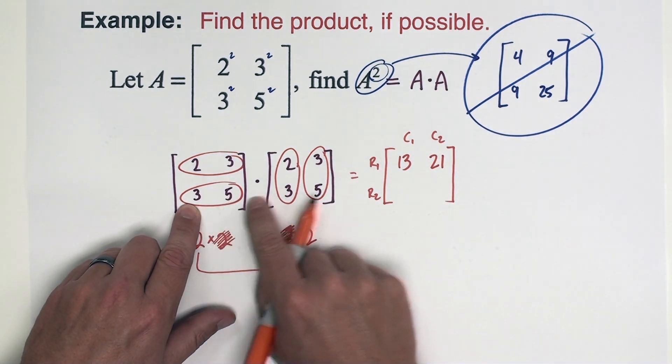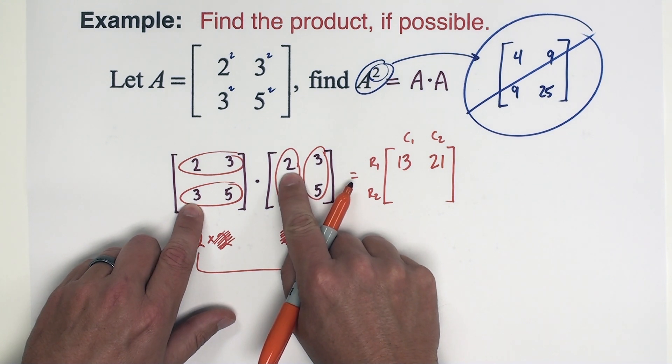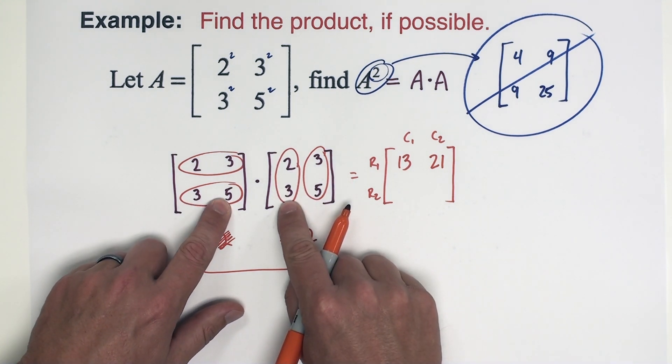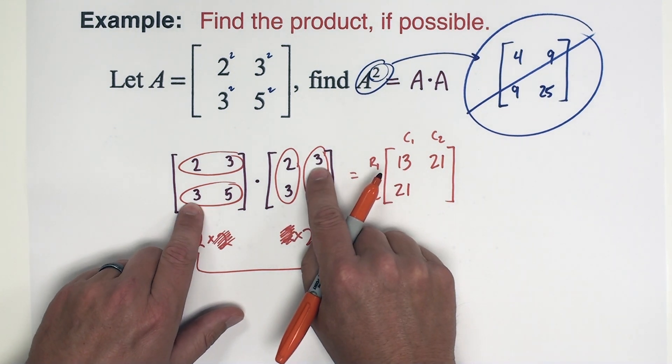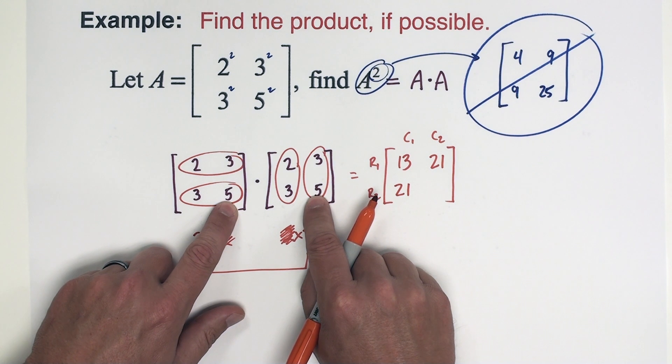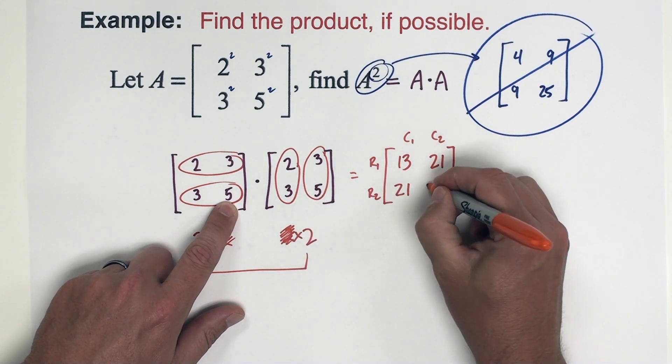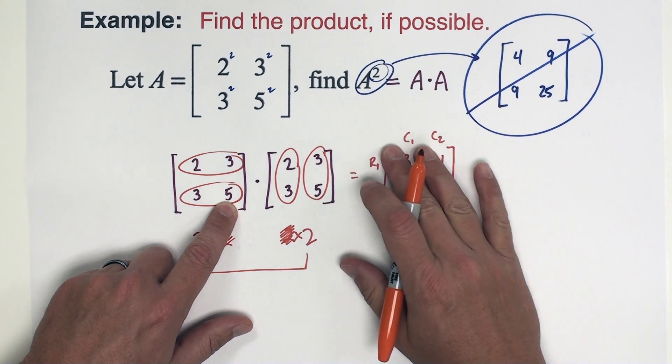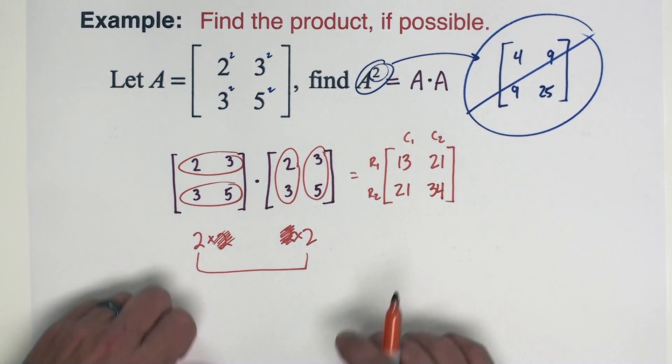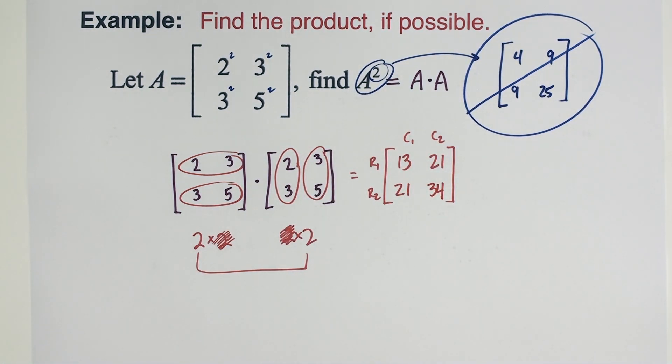I'll shift down to the bottom row. Three, five with this column, that's going to be six, that's going to be 15, that's another 21. And then here we're going to have nine and 25, which is 34. So there's our matrix product. When we're doing a matrix squared, remember to take it times itself, go through the entire matrix product process, and you're going to be just fine.